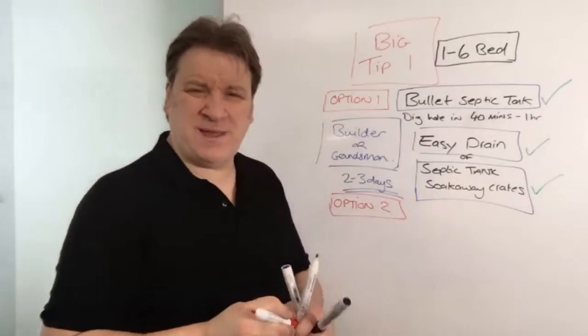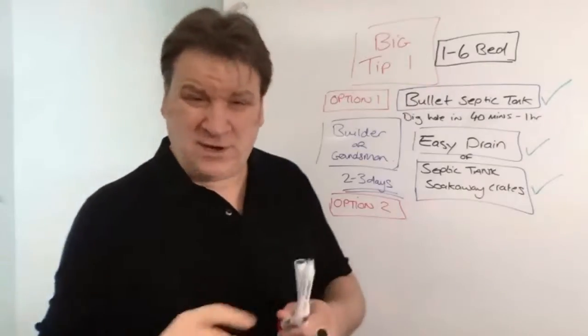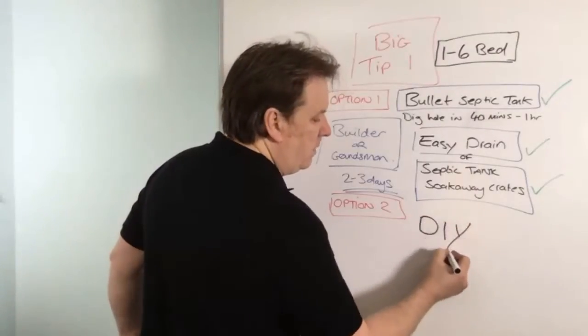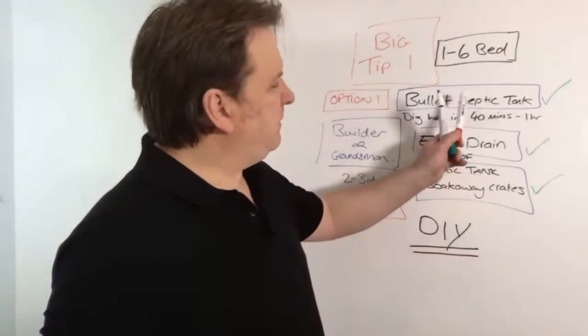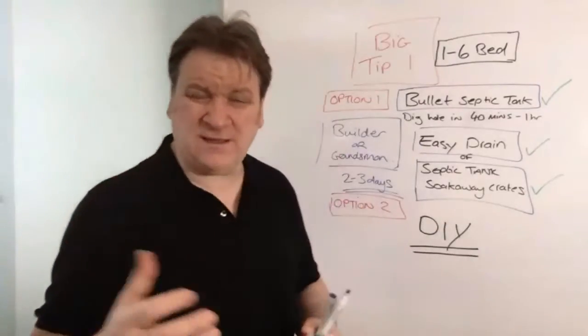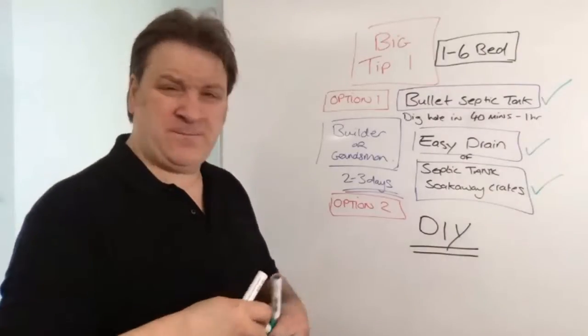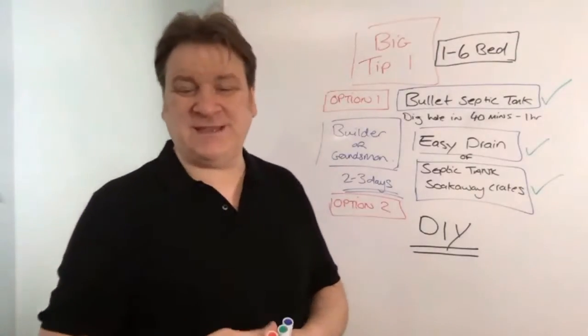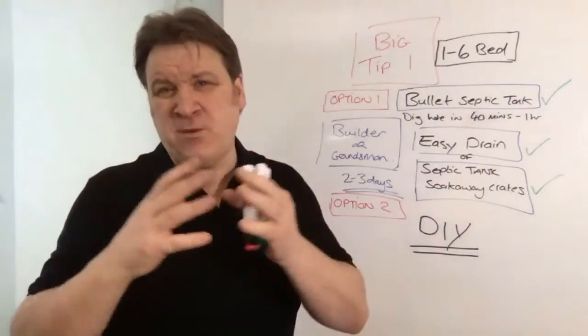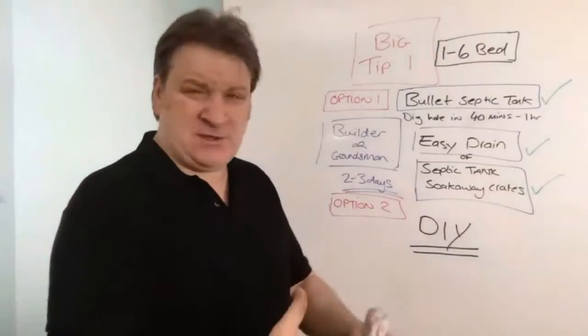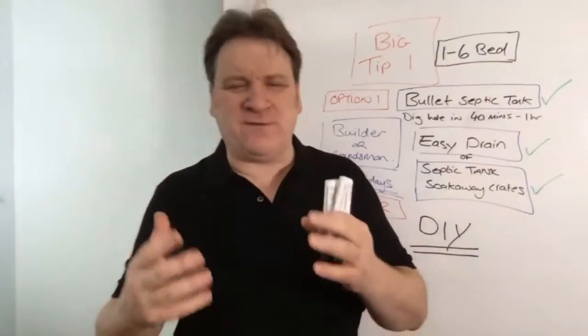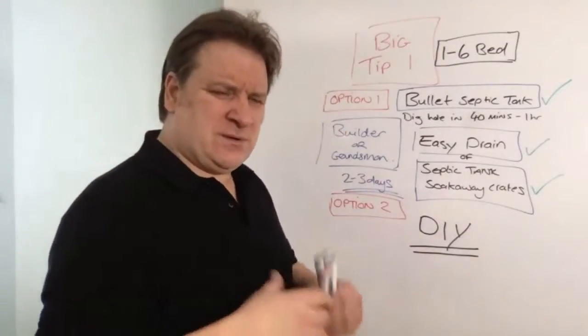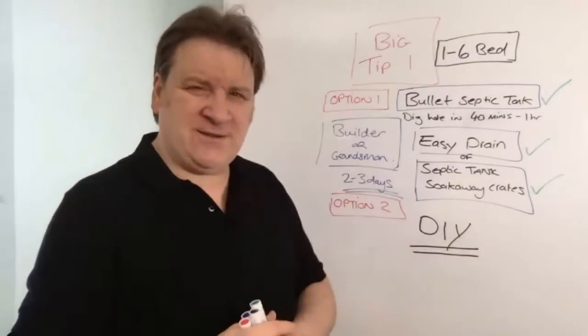Option Two - and this is an option I seriously recommend - do it yourself, DIY. Why? Because the Bullet septic tank, Easy Drain, and the septic tank soak away crates are designed for the DIY market. The builder and the groundsman will take two to three days because they don't want to seem to just bam bam bam get the job in and be gone - they stretch the job out a bit so they don't get questioned as to why they did it so quickly.